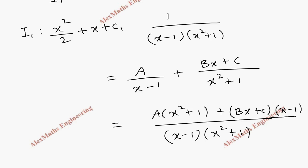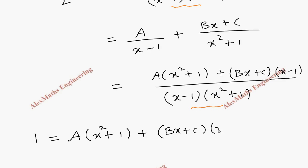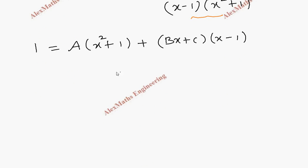Since both denominators are the same, we equate both numerators. So 1 equals A times x squared plus 1 plus Bx plus C times x minus 1. Now let's choose values to find the constants A, B, and C. Let's take x equals 1 — this equation becomes 1 equals 2A, and the second part becomes 0. From this we get the value of A as 1 over 2.